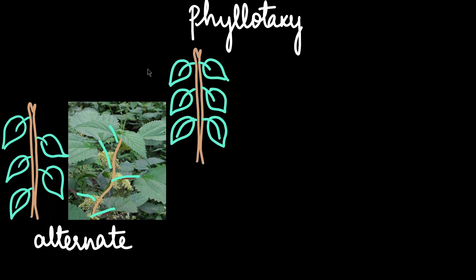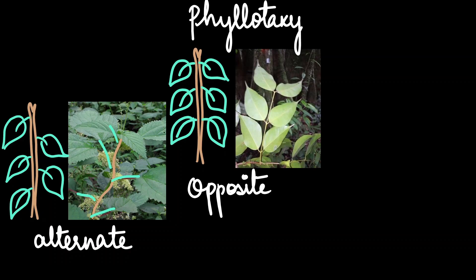The second type is called opposite phyllotaxy. In opposite phyllotaxy, we see two leaves coming at the same node but on opposite sides. Here we can see the branch and the leaves are arising on both sides, but opposite to each other.